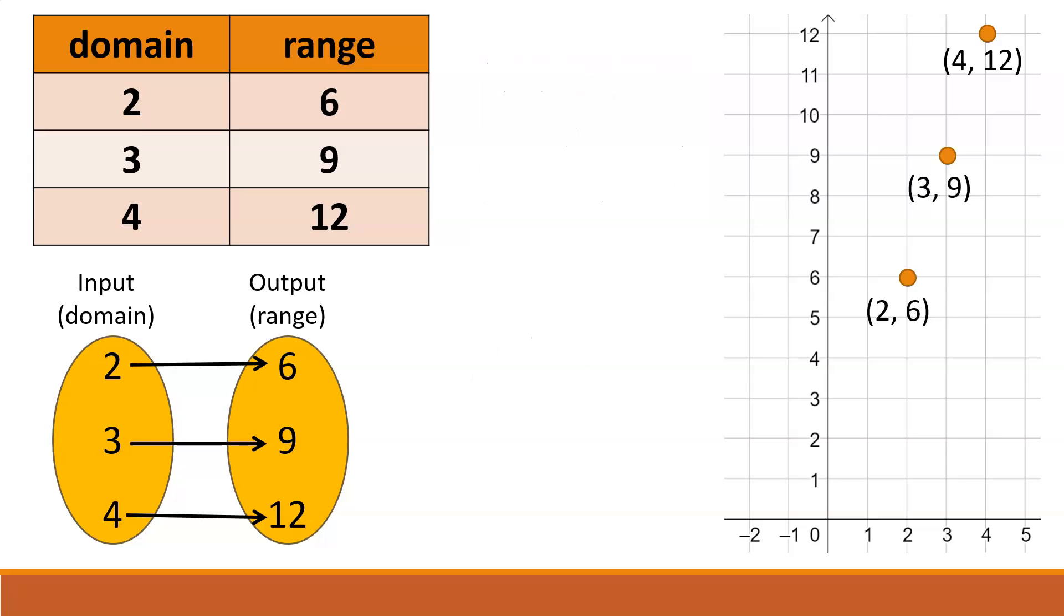Now, let's focus on these three representations and answer the question, is this a function? Remember, to be a function, each input value has to correspond to one output value. And in this case, that's true. 2 only corresponds to 6, 3 only corresponds to 9, and 4 only corresponds to 12. So this is a function.